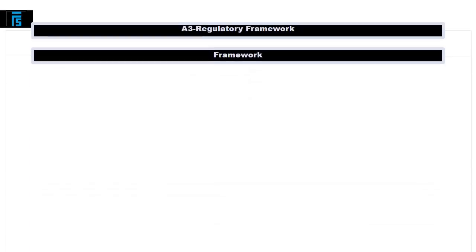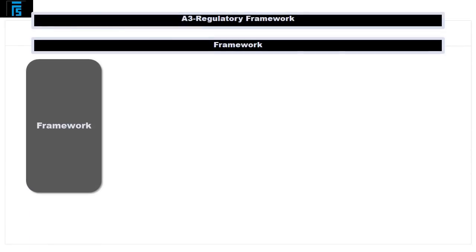So let's focus on what a framework actually is. In general terms, a framework may be understood as a basic structure underlying a particular system. You may think of a framework as a tool for putting information in order — a tool for avoiding chaos.